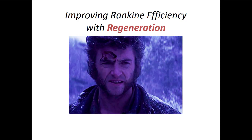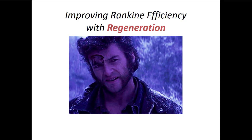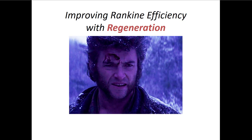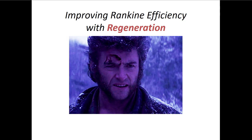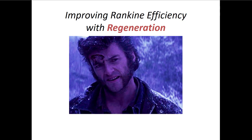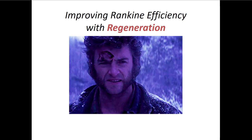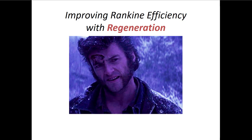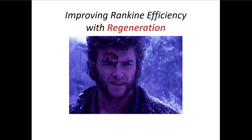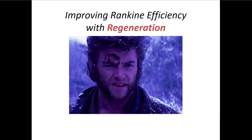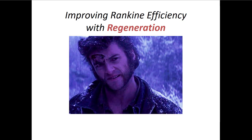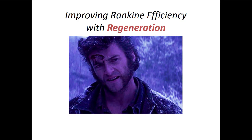We've been talking about heat engines in general and Rankine cycles in particular. We went through examples with a four-component Rankine cycle and saw that the thermal efficiency wasn't even half of what the Carnot efficiency told us it could be. We went through different ideas on how to improve Rankine efficiency last class, talking about reheat in particular, and today we're going to talk about another strategy called regeneration.